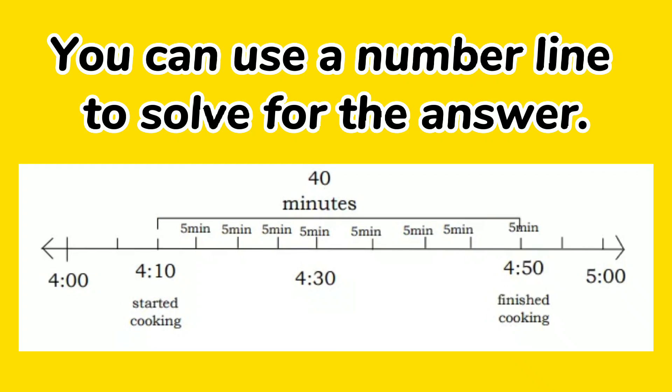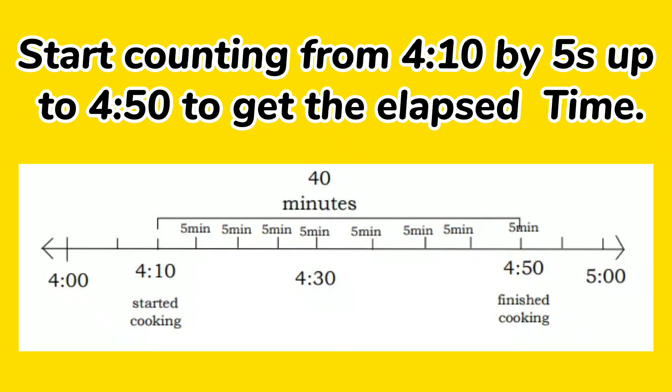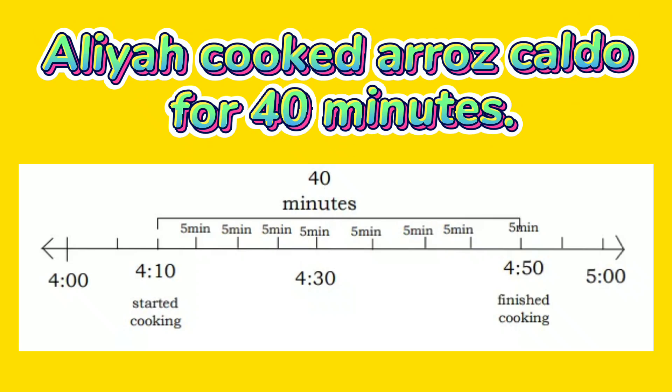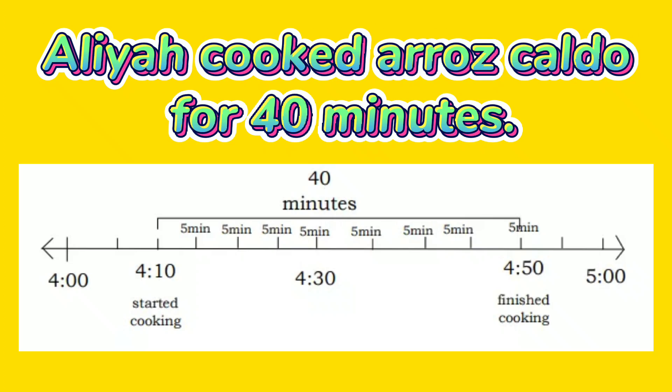You can use a number line to solve for the answer. Start counting from 4:10 by 5s up to 4:50 to get the elapsed time. On the number line, let's count from 4:10 by 5 to 4:50. And we got 40 minutes. So, Aliyah cooked arroz caldo for 40 minutes.